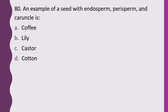Question 80. An example of a seed with endosperm, perisperm, and caruncle is: coffee, lily, castor, or cotton. The correct answer is option C, castor.